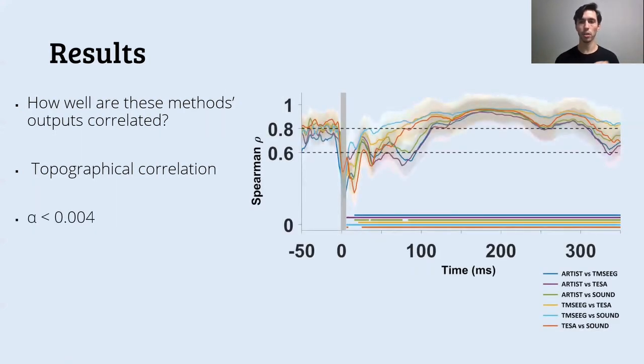So each colored line here represents one comparison, one correlation. On the y-axis you can see the amount of correlation, and on the x-axis you can see the time. These straight lines here represent the significant instants in time in which the topographical correlation was significant. And the first thing you can see is that the topographical correlation was significant basically in every instant in time, except from the beginning of the signal. And also you can see that at the beginning of the signal, the amount of correlation is low, while it gets better in later latencies, but not for all the comparisons. You can notice that for the comparisons with ARTIST method, they remain low until almost 100 milliseconds.